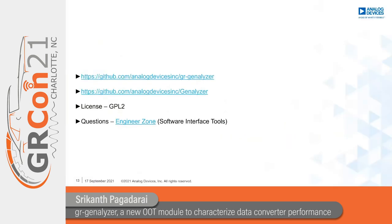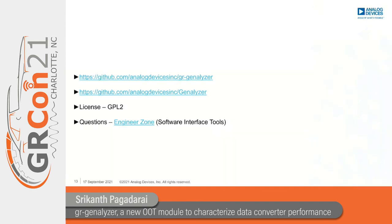In conclusion, while it is possible to use discrete blocks from the GNU Radio source tree to compute many data converter performance metrics, a dedicated out-of-tree module that computes such metrics according to standards documents is definitely needed. GR Generalizer is intended to fill this gap by providing implementations of common performance metrics in a standards-compliant manner. Thank you.